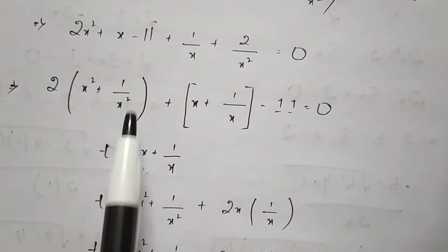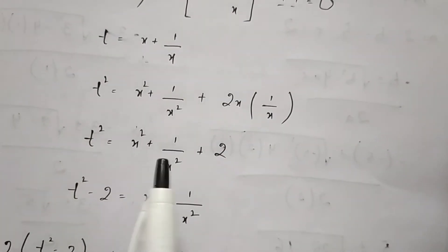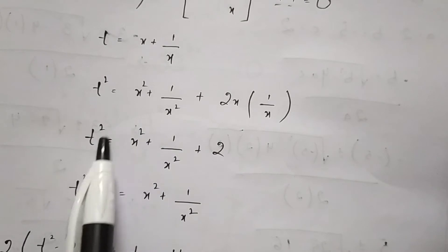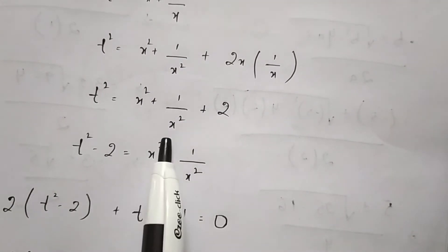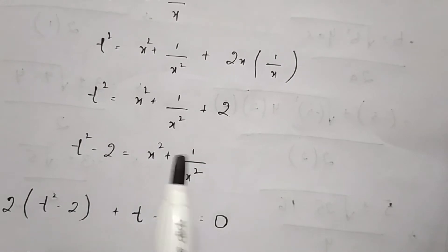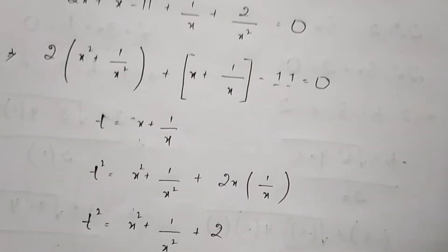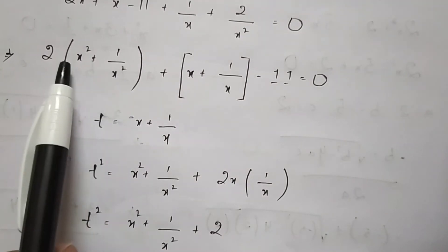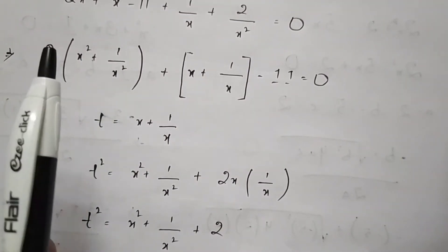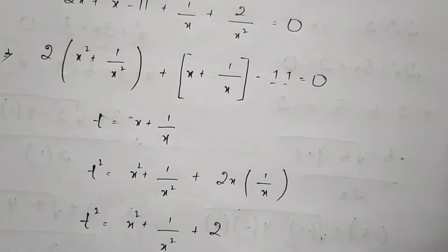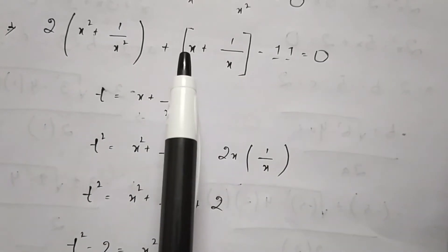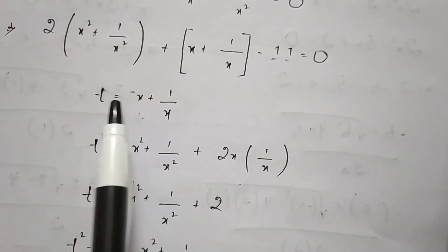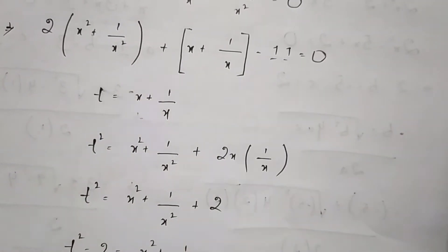We need to get x² + 1/x². Therefore, we send 2 to the left-hand side to get t² - 2 = x² + 1/x². So in the place of x² + 1/x², we put t² - 2, and in the place of x + 1/x, we put t, and minus 11 will be as it is.